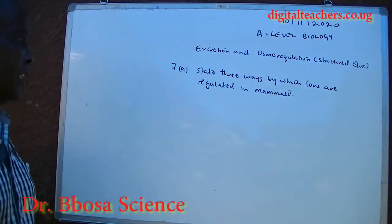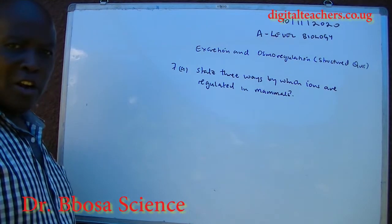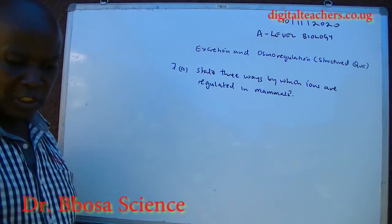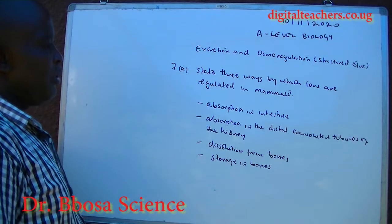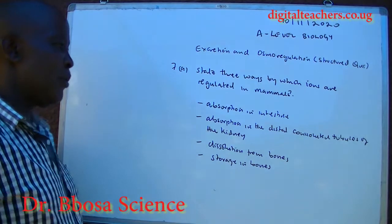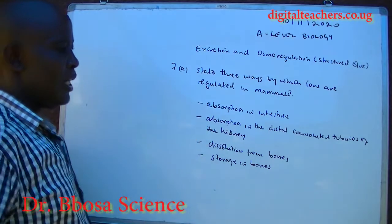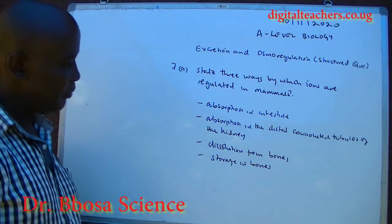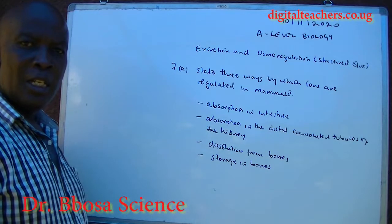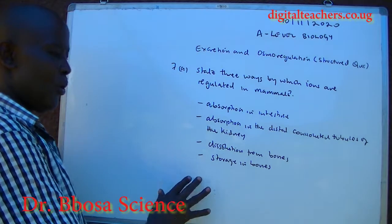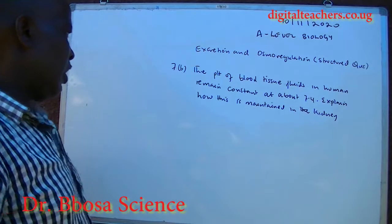Number seven A: state three ways by which iron is regulated in mammals. Minerals can either be absorbed from the intestines or in the distal convoluted tubule, or they can be removed from bones or stored to bones.